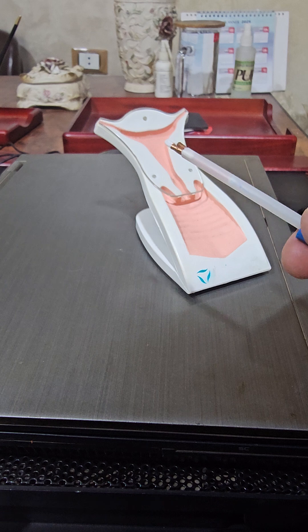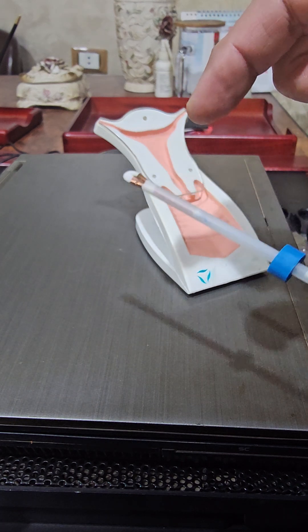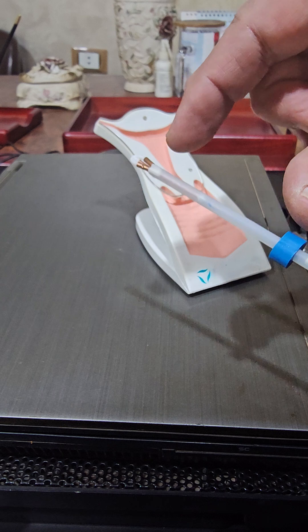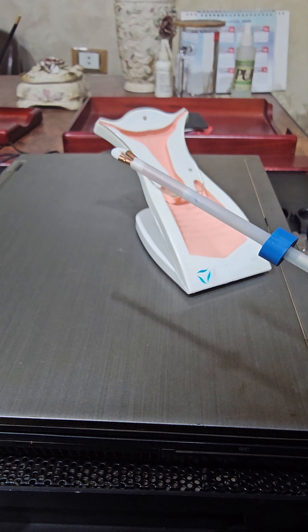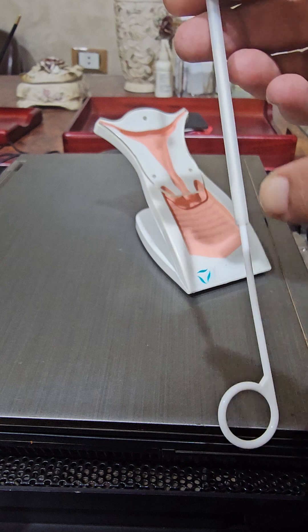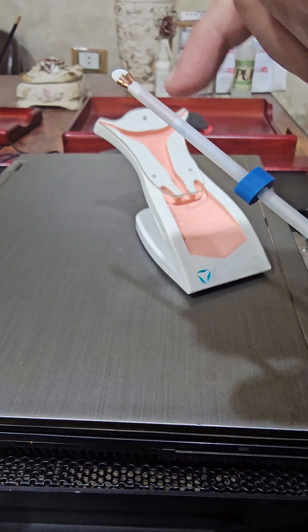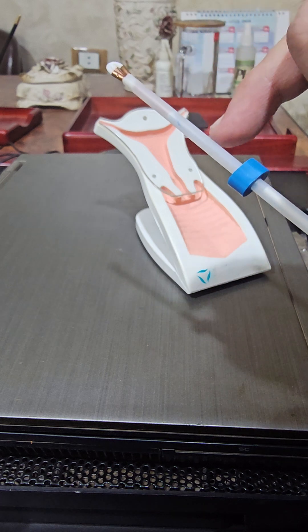This is the flange denoting the length of the uterine cavity. You measure it first using uterine sound and denote the position of the uterus. Okay, this is the plunger and this is the inserter and this is the flange and this is the copper T and the two transverse arms inside the inserter.